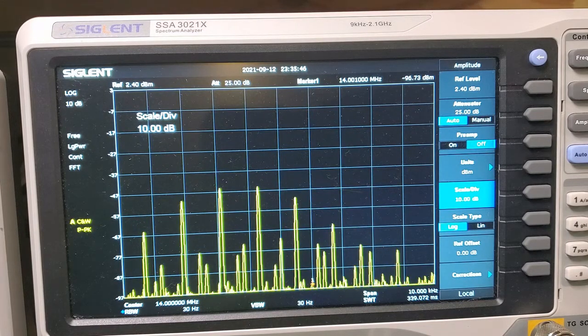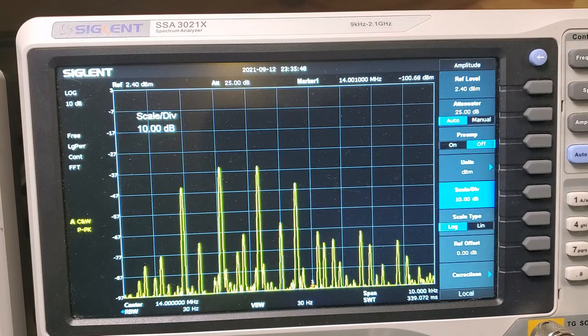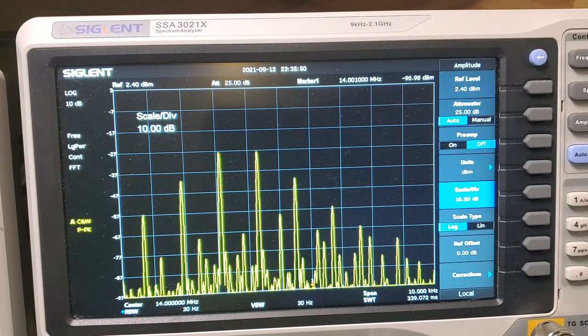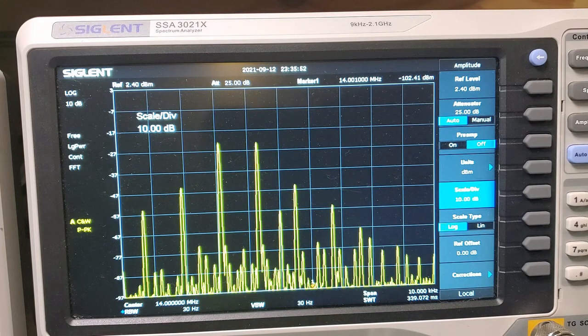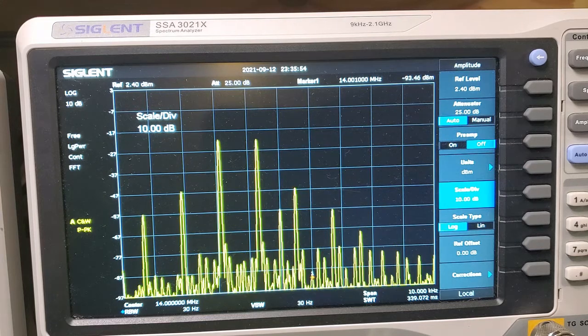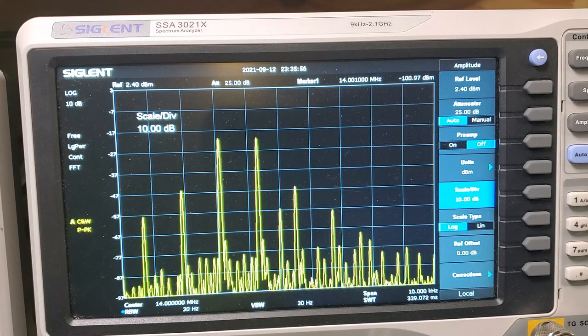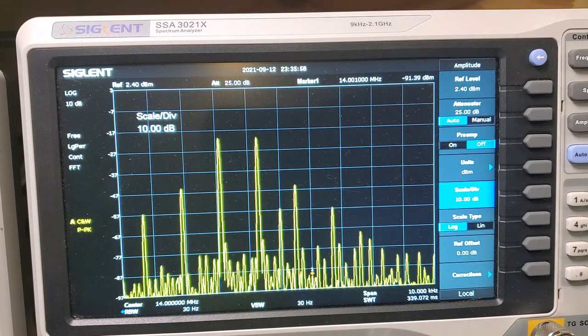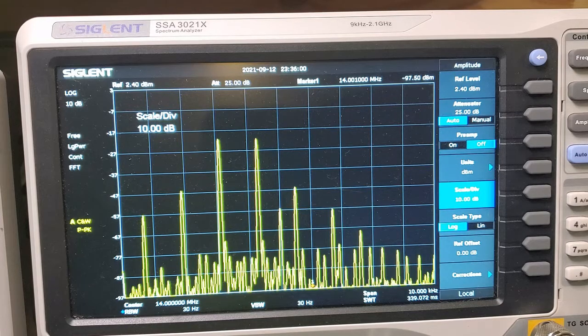So that's about the sweet spot for gate bias voltage. Any less and I get that sort of signal and obviously any more and we start to get that runaway behavior in the output there. There we go, there's the sweet spot right there.